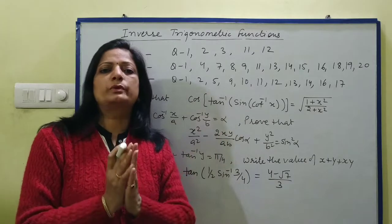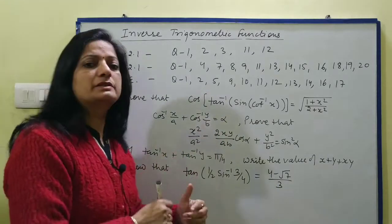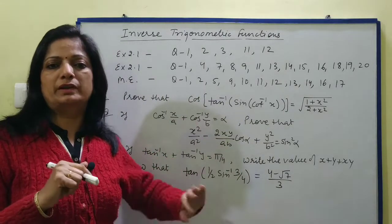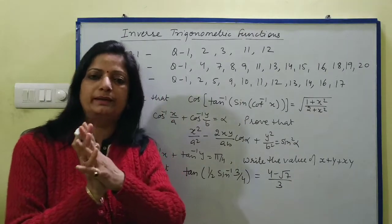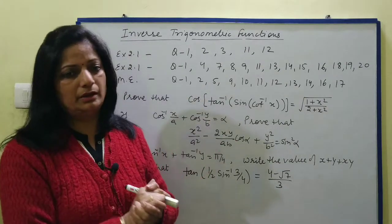If you have x square minus a square, then in place of x put a sec theta. And if a square plus x square comes under root, whether in differentiation with inverse or in integral, if under root a square plus x square is there, then you put x as a tan theta. Then your equation will be solved.